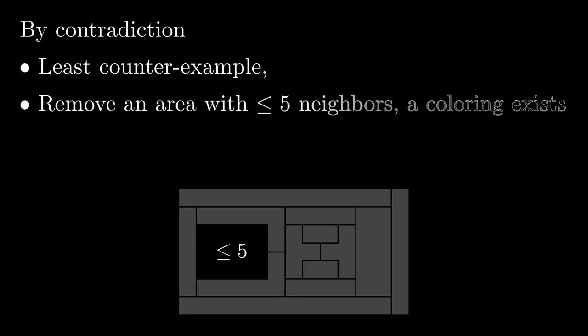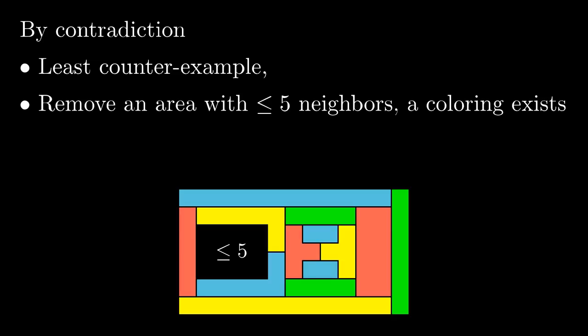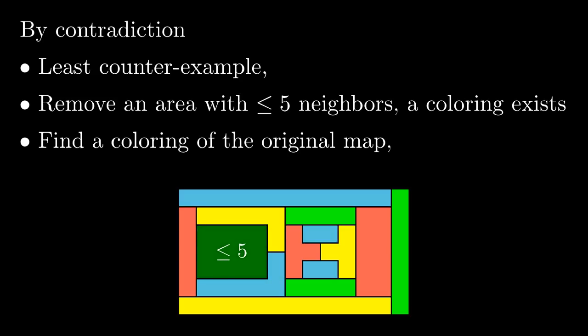After removing this area, there are less areas than in the least counterexample. That means that the remaining map can be colored by 4 colors. To reach the contradiction, it remains to find the coloring of the original map. It will be the contradiction with the assumption that we've picked a counterexample. This case was easy since the removed area had just 3 neighbors. When the removed area has just 3 neighbors or less, there will always be a remaining suitable color. To finish the proof, we have to analyze the cases when the removed area has 4 or 5 neighbors.